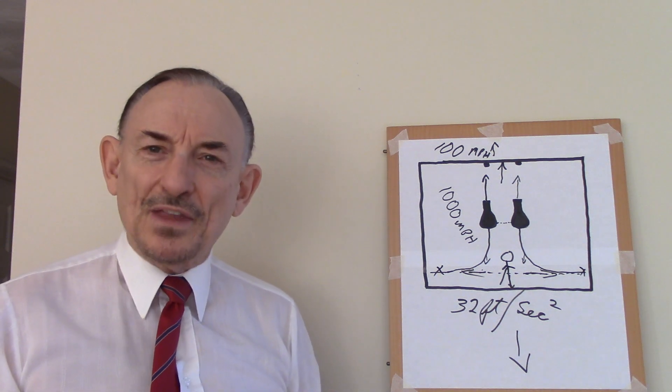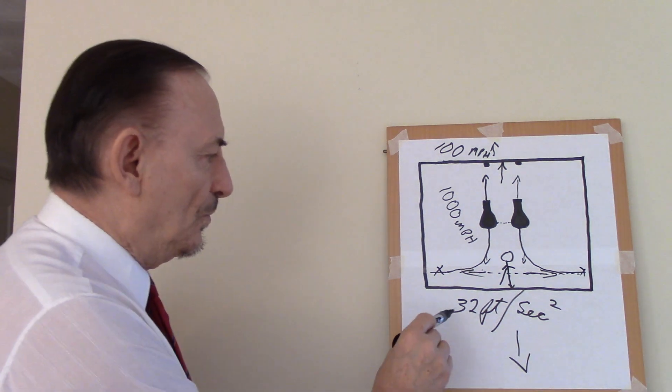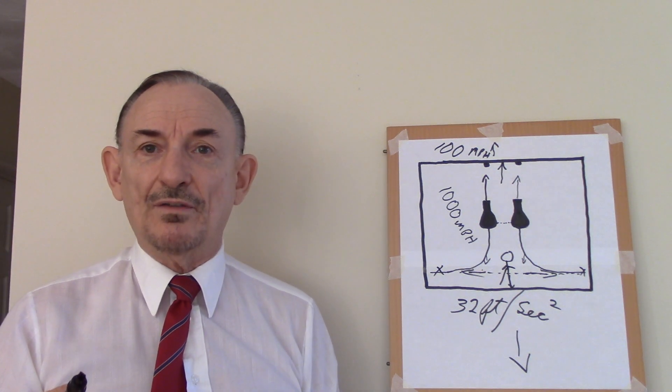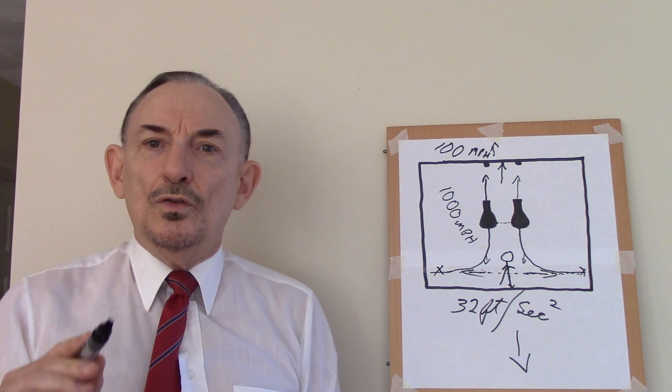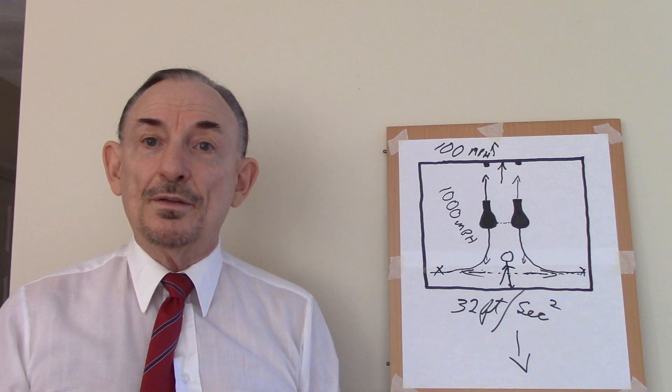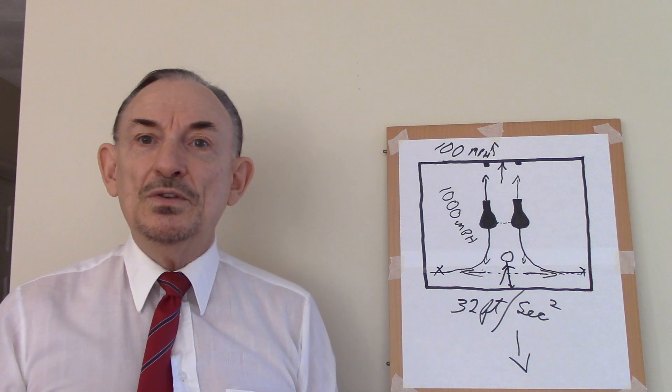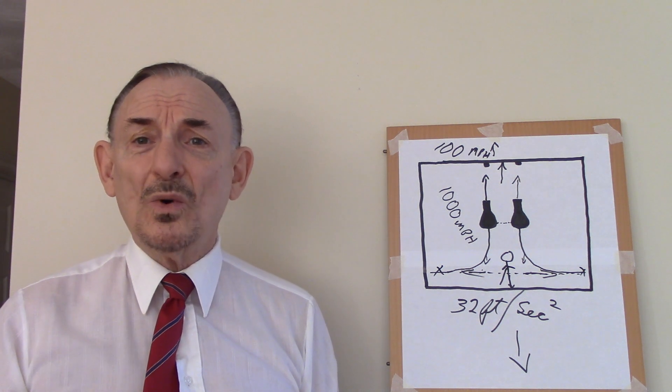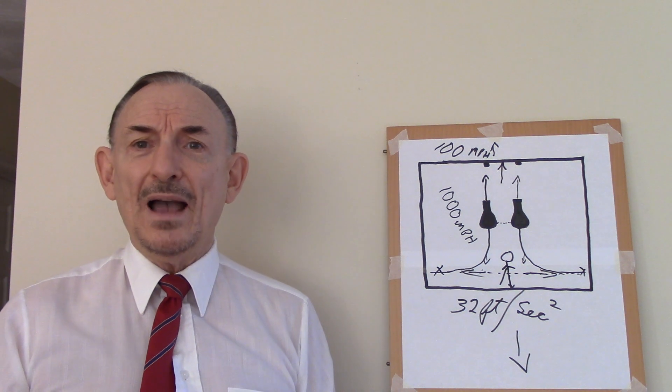Now, the neat thing about that is that at 32 feet per second squared, which is one g, one gravity, one force of gravity, you can reach Mars from Earth, depending on where Earth and Mars are in their orbit, between 39 to 54 hours.